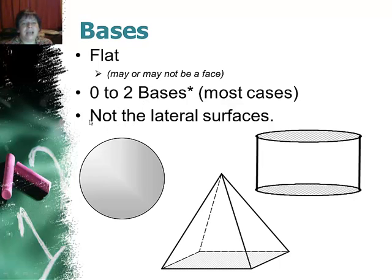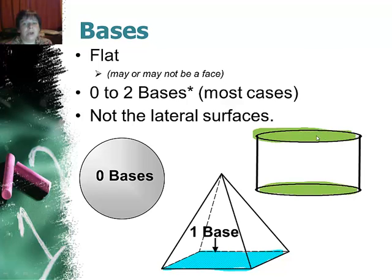Now the lateral surfaces, lateral meaning side, that's not a base. So in this shape here there are no flat surfaces so there are zero bases. On this shape there is a flat surface on bottom but not a matching one on top, so this has one base. On this one we have two flat surfaces that go together and so this shape has two bases. Notice the base can be a polygon or it might not be a polygon.